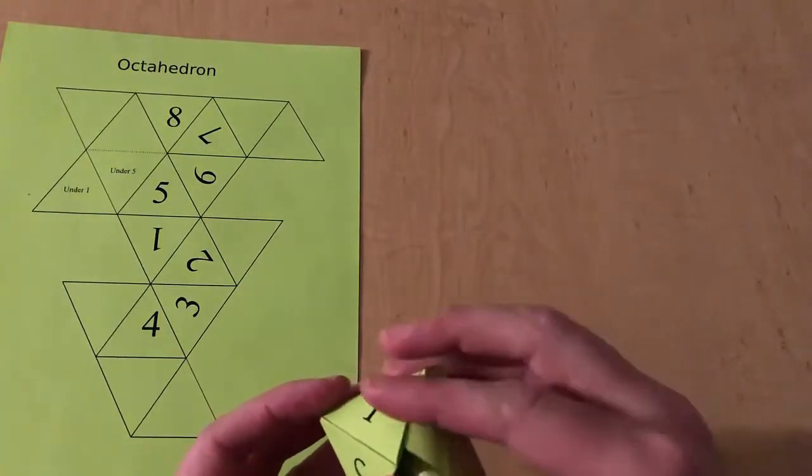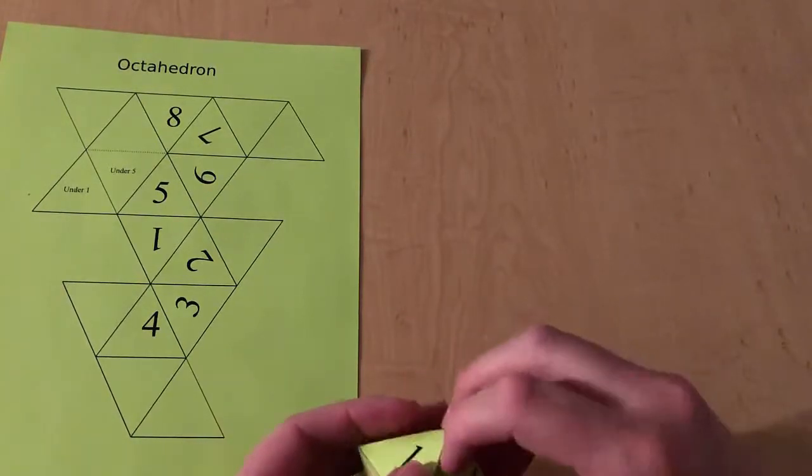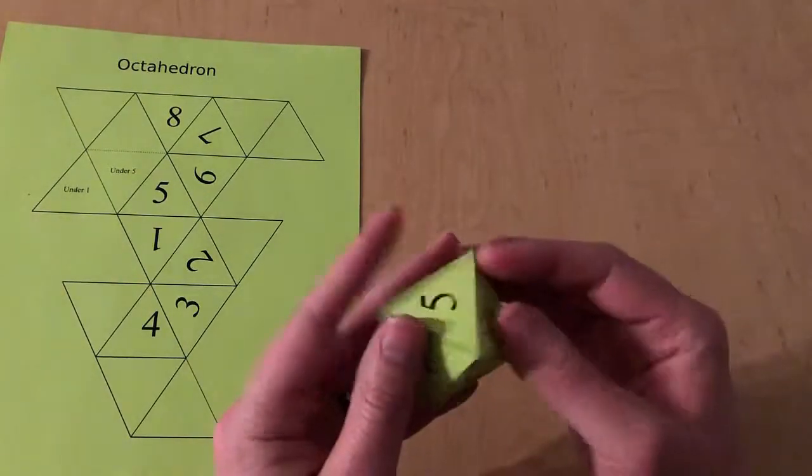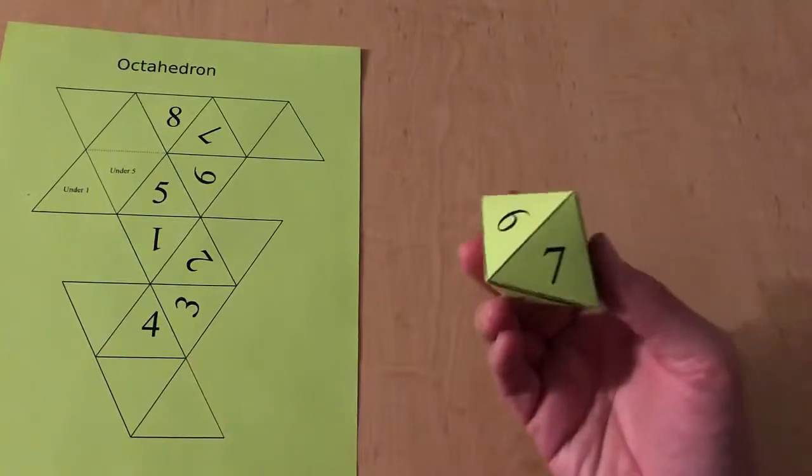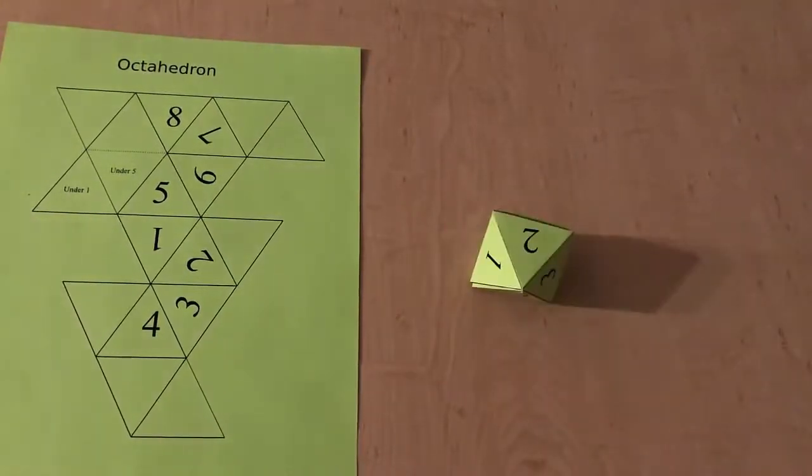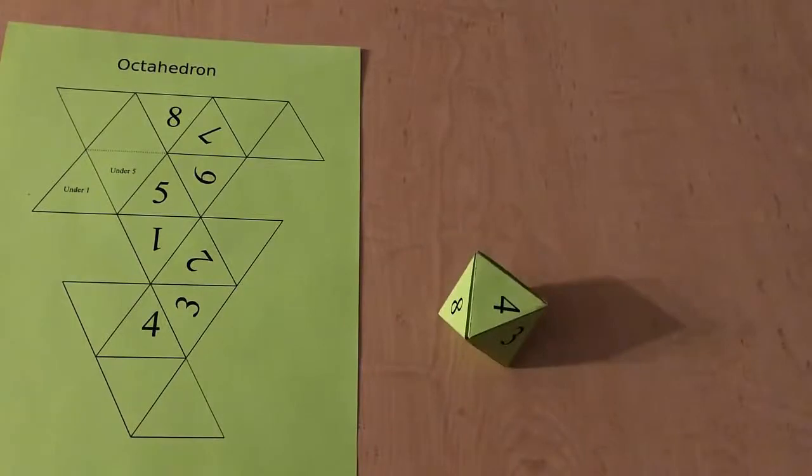But there we go, and you get a pretty firm octahedron. Could make an eight-sided die if you want.